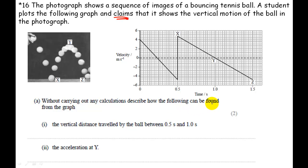So it says without carrying out any calculations, describe how the following can be found from the graph: the vertical distance traveled by the ball between 0.5 seconds and 1 second. Here is 0.5 seconds, here is 1 second.